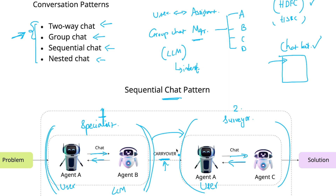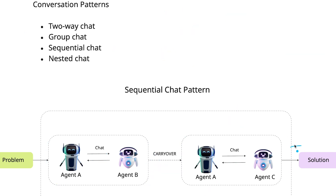This is a sequential chat pattern where two different sets of agents are implemented with a carryover mechanism in place. The LLM summarizes all conversations that happened between agent A and agent B and sends that as context to the subsequent set of agents. The end objective is to provide a good customer experience to the user asking about net banking or mobile banking services.